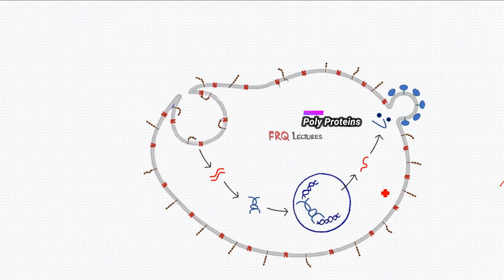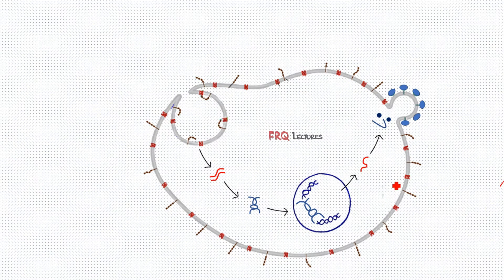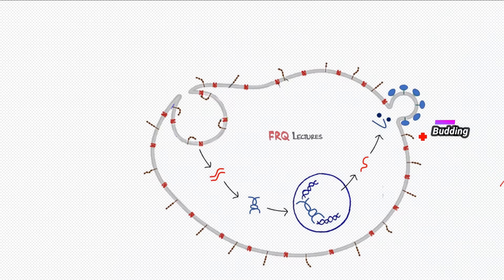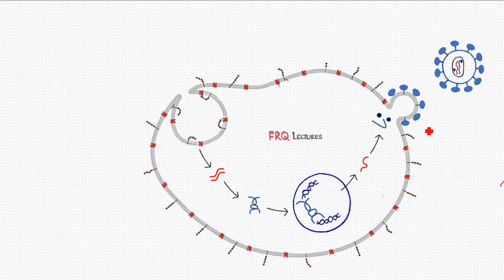HIV has its own proteases but also uses proteases present within the host cell or macrophage. After cleavage, the proteins are in their active form. After production of all required components, the phase of assembly begins — the components assemble with each other. Then budding takes place, and this bud eventually exits the macrophage in the form of mature daughter HIV.